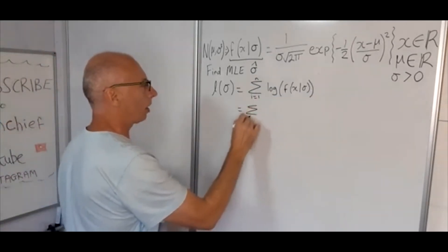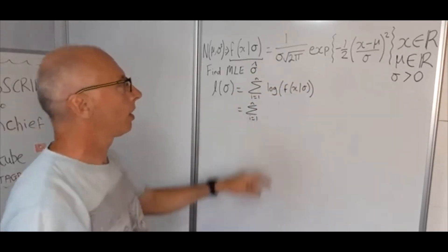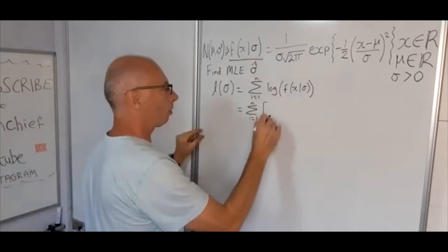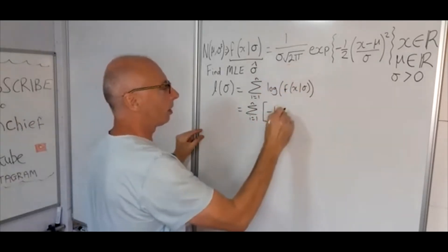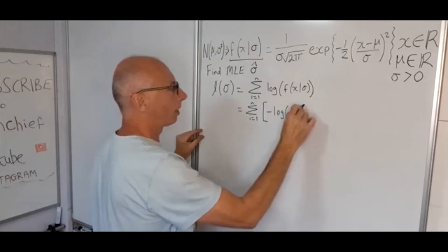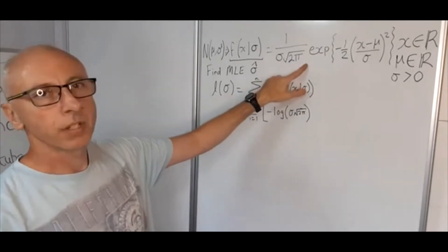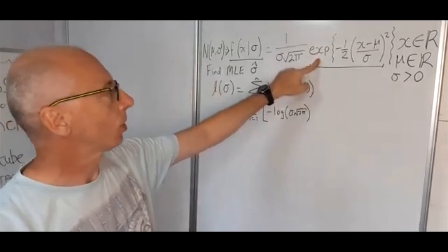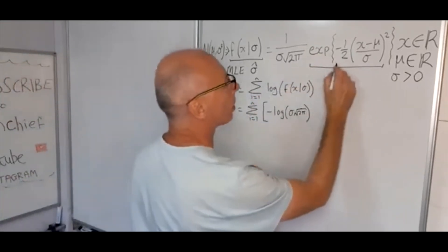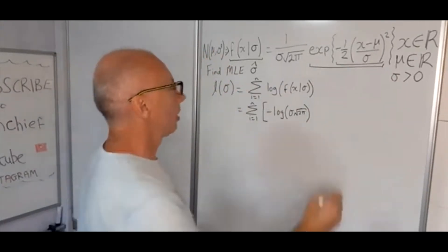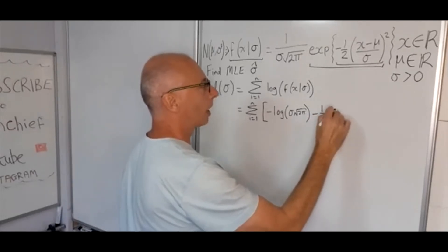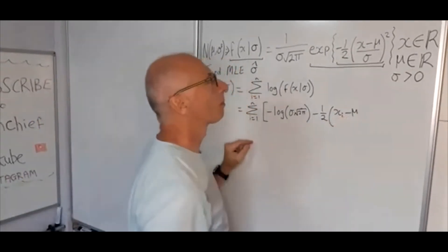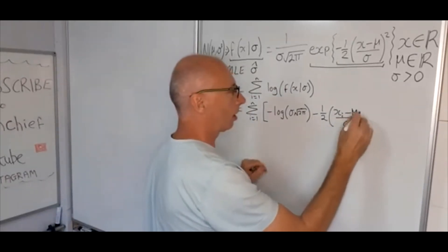That equals the sum from i equals 1 to n. Now I want the log of this. The reciprocal of something with a log property becomes a negative log. So all in one bracket: negative log of sigma times square root of 2 pi. That takes care of the first term. Now for the exponential term — since exponential and log are inverse functions, they cancel each other out. So we just write what's inside the bracket: minus one half times x i minus mu over sigma, all squared.